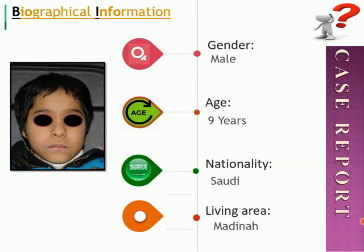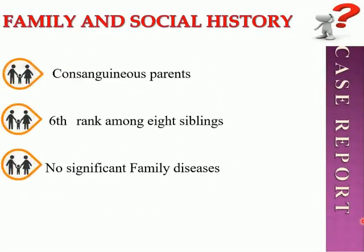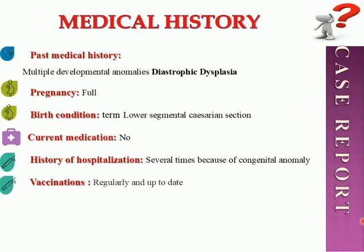Our patient is a nine-year-old Saudi male living in Al-Madinah Al-Munawwarah. Family and social history: he comes from conscientious parents and is the sixth of eight siblings, with no significant family disease history. Past medical history: he has multiple developmental anomalies — Diastrophic Dysplasia. His pregnancy period was full-term and normal, and delivery was by lower segment caesarean section. He is currently on no medication. He has been hospitalized several times due to congenital anomalies, and his vaccinations are up to date.